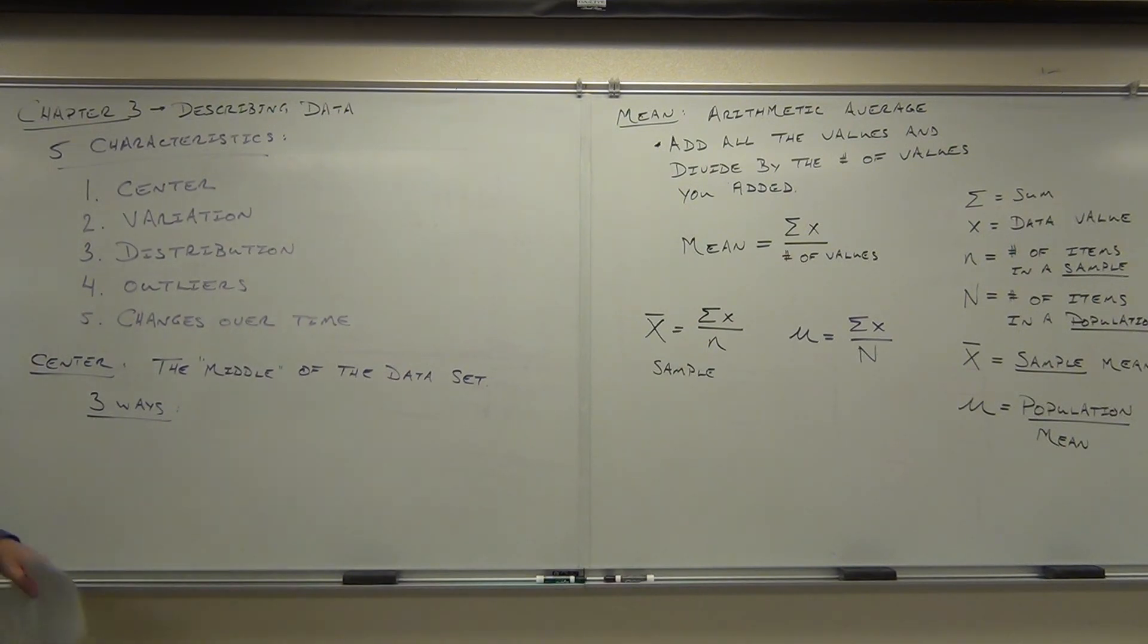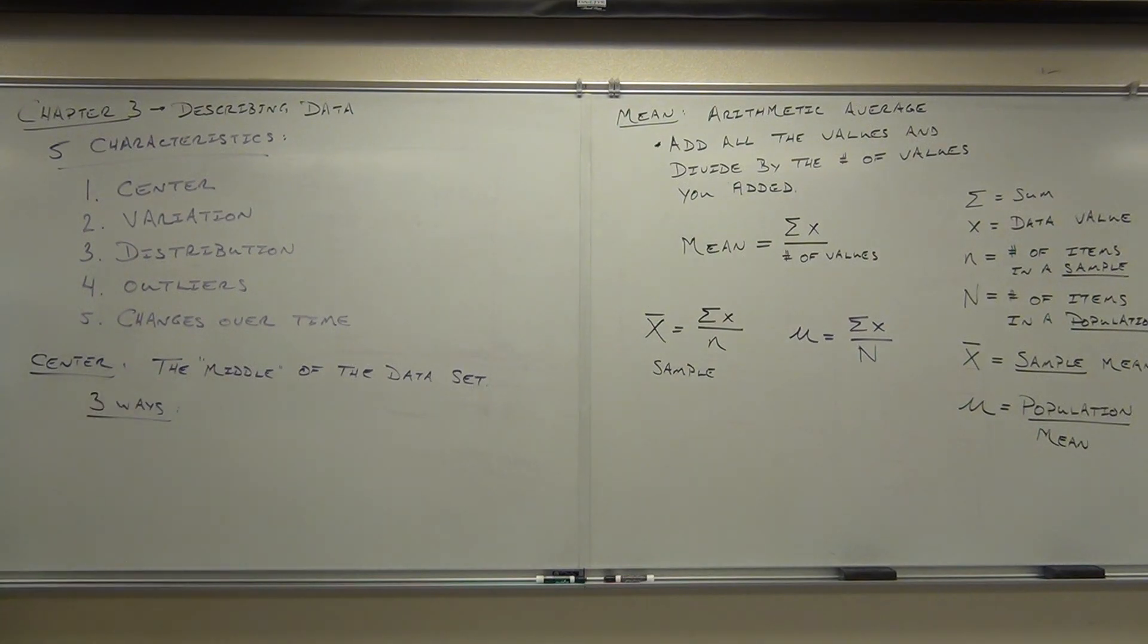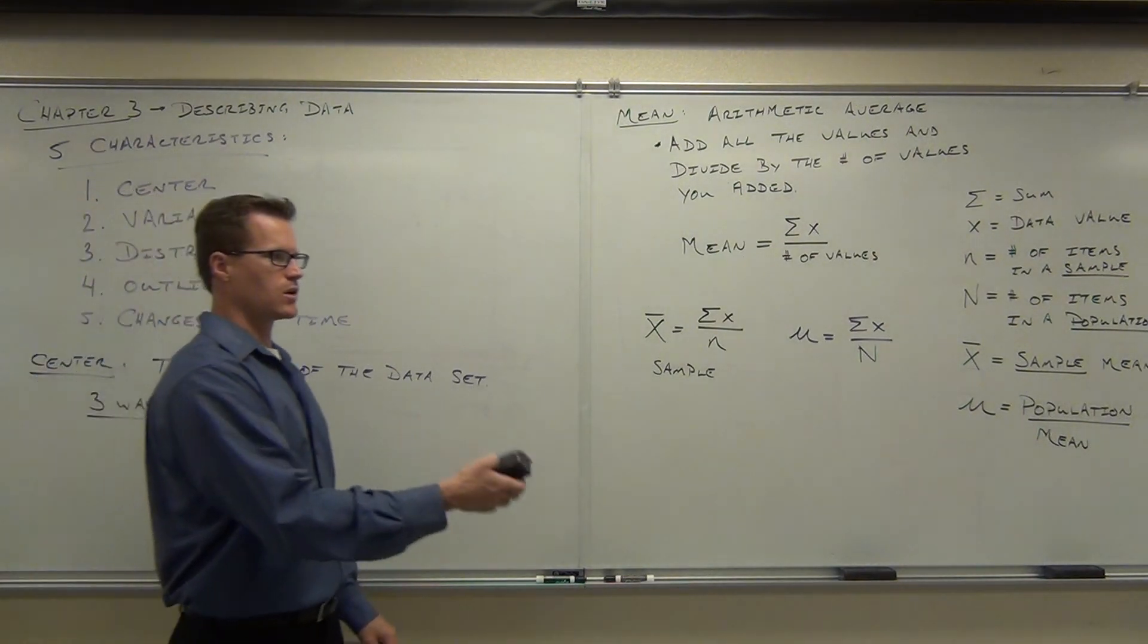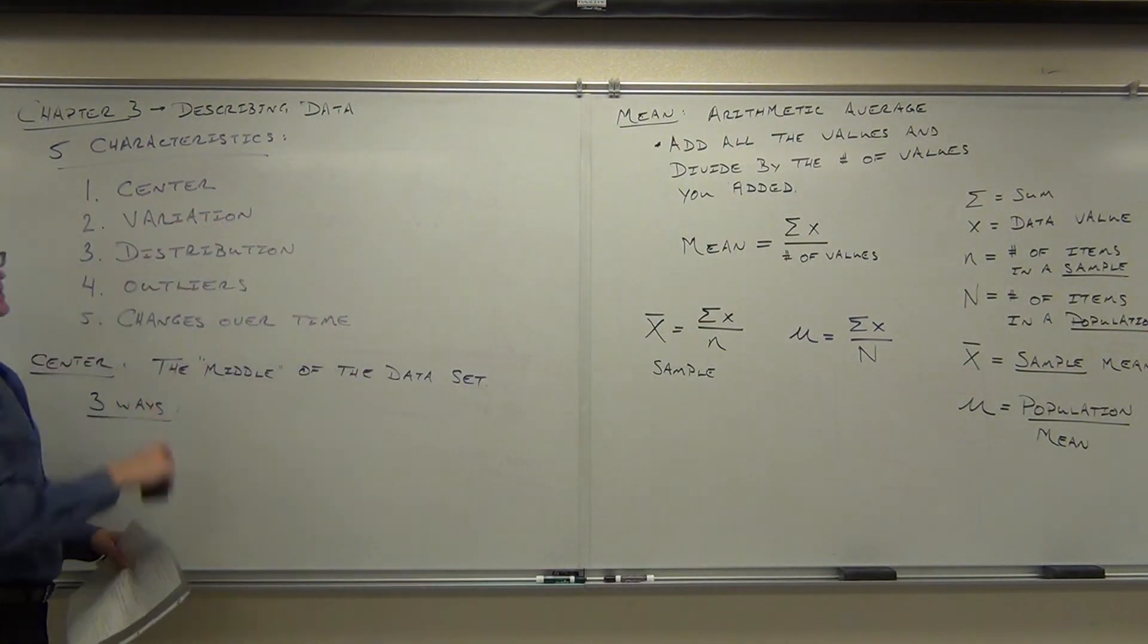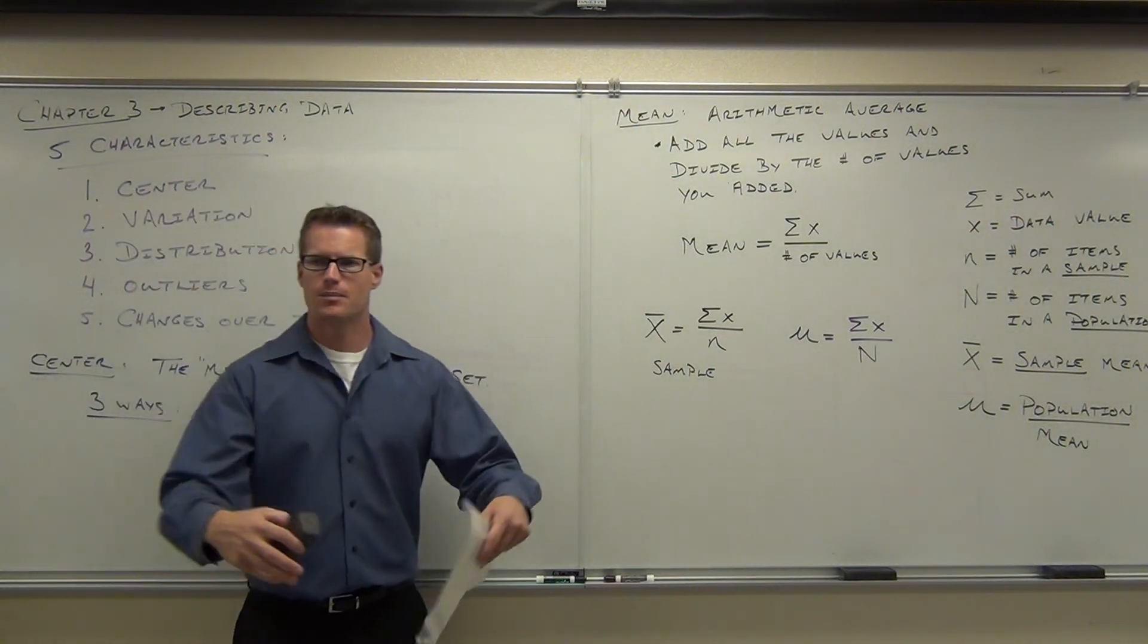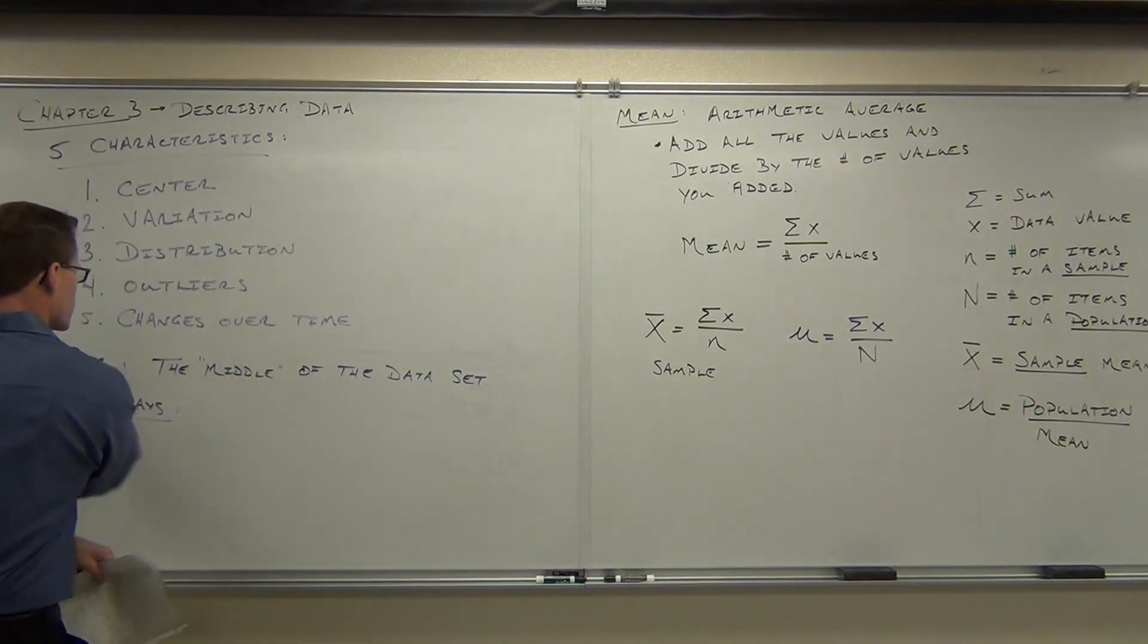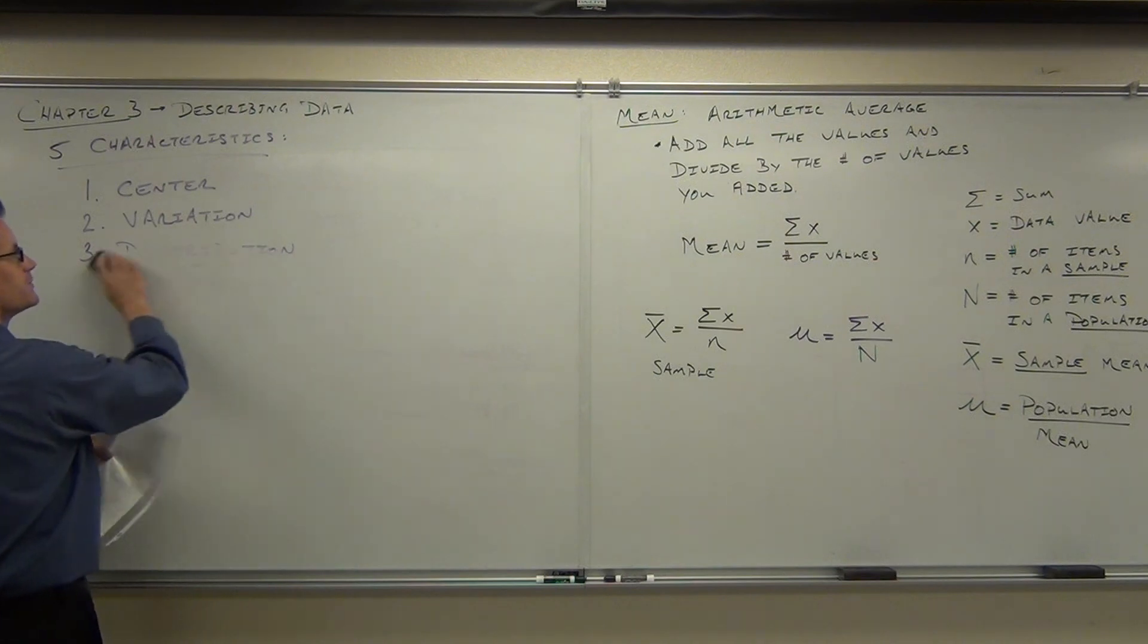Let's go ahead and give this a try just to make sure we have this idea down. Are there any questions before we get on? So we have this idea called center, it's like the middle of our data. We haven't talked about any of these yet, we're just really on our mean so far. But the mean is calculated by adding up all the values divided by the number of values you've added, whether you're in a sample or a population. So let's take a look at the sample of data.